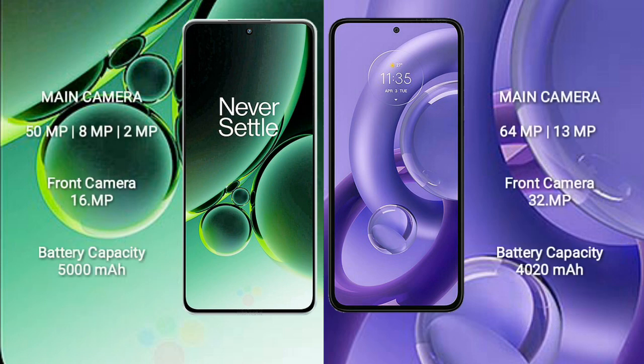OnePlus Nord 3 has a rear triple camera setup: 50MP plus 8MP plus 2MP, and a front camera of 16MP. Motorola S30 Neo has a rear dual camera setup: 64MP plus 13MP, and a front camera of 32MP.